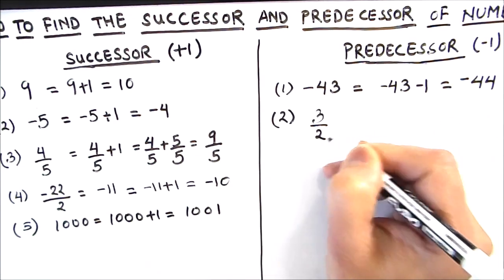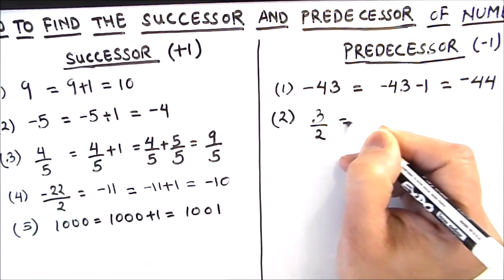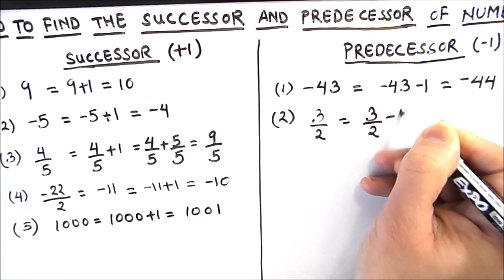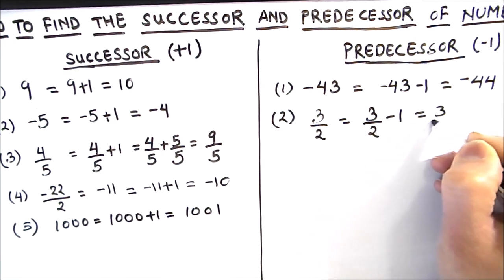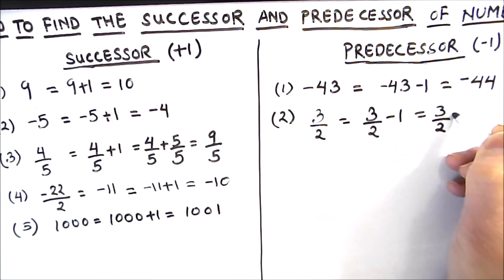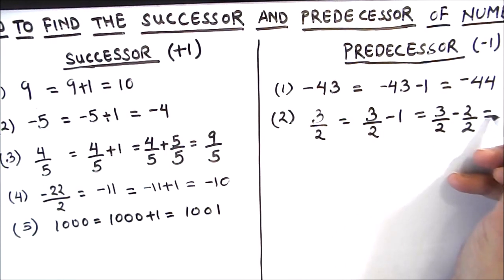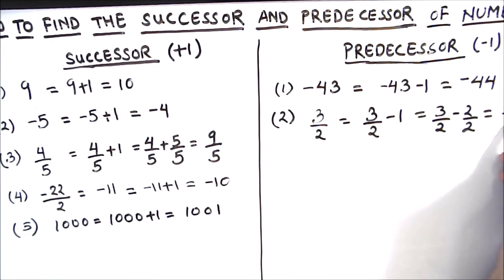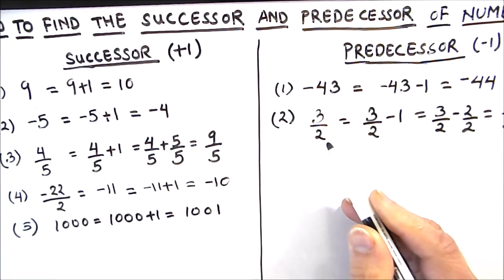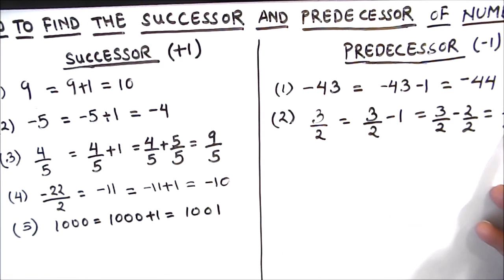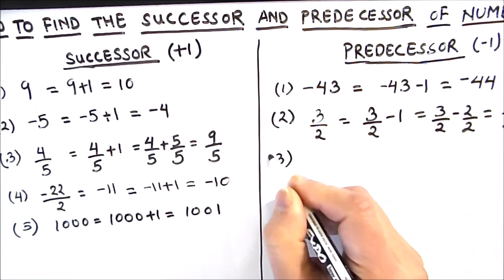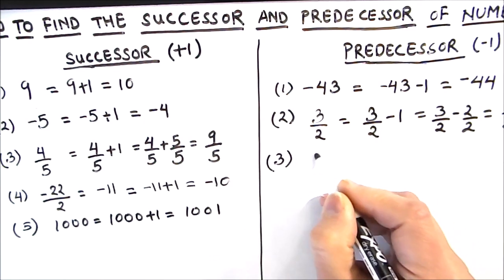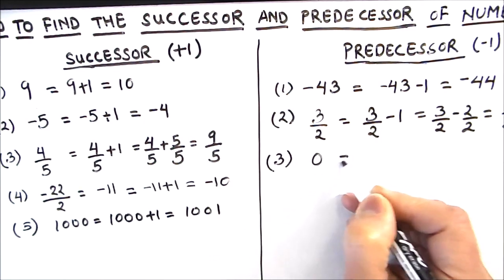Next, we take the rational number 3/2. For finding the predecessor, we subtract 1 from 3/2, which gives us 3/2 minus 2/2, which is equal to 1/2. So the predecessor of 3/2 is 1/2.